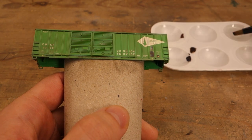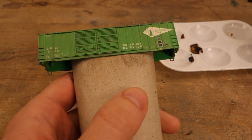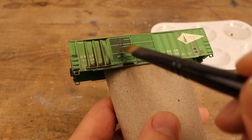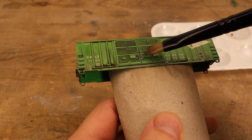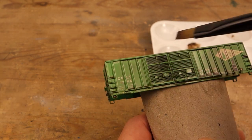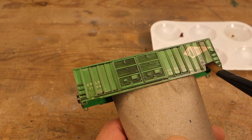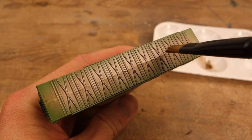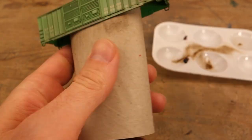After letting this layer dry and sealing it I moved on to a wash of burnt umber to represent dried on spray and road grime. I put the wash on as a relatively thin mix and then spread it all around the car body. Then I cleaned up the brush and picked up most of the wash, again making sure that it doesn't pool up in odd places.